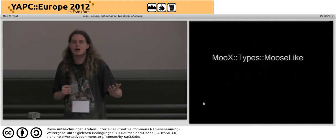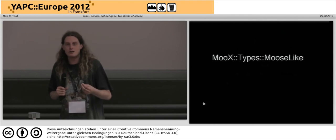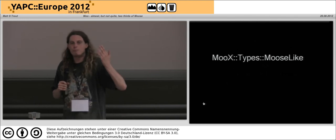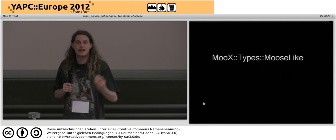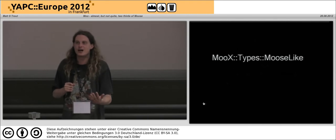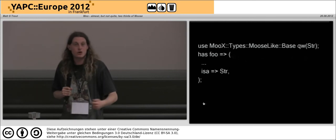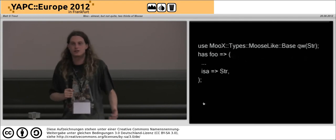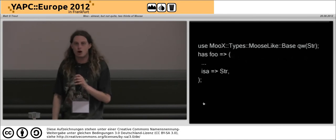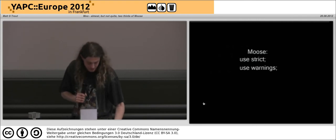There's also MooX::Types::MooseLike, which provides an equivalent system to MooseX::Types for Moo. Since Moose's string types get kind of messy in large-scale projects, most developers I work with using Moose heavily already use MooseX::Types for all their type constraints. That ends up looking like a subroutine constant, which I've always liked better than strings because it means if I get the type name wrong, the Perl compiler tells me to sod off. I always like it when the compiler tells me I'm an idiot, rather than waiting for my test suite to discover it.